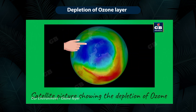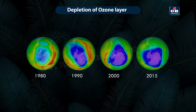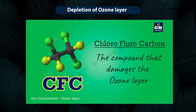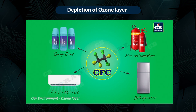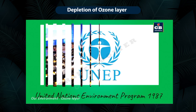Now there is a problem with this ozone layer. There is a gradual thinning of the ozone layer present in the upper atmosphere due to certain reasons. This thinning of the ozone layer is called ozone depletion. The decline of ozone in the atmosphere was identified by various scientists since 1980. The main reason for the decline of ozone is a chemical compound called chlorofluorocarbon. CFCs are used in the manufacture of air conditioners, refrigerators, fire extinguishers, and spray cans.